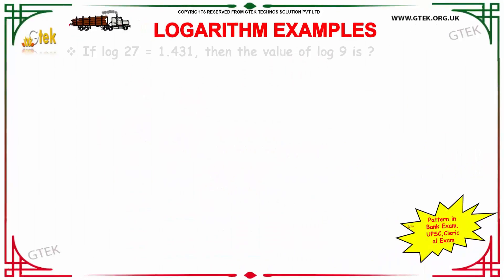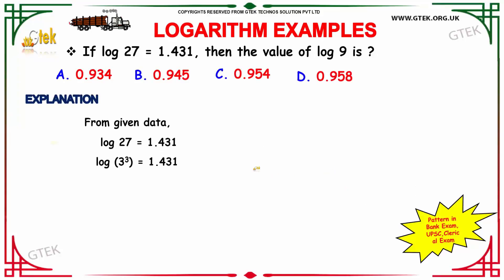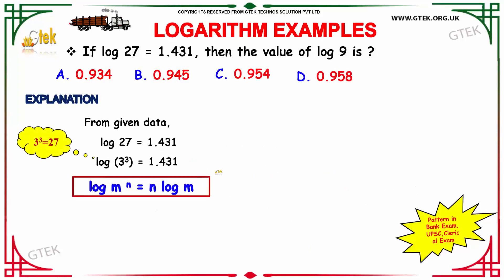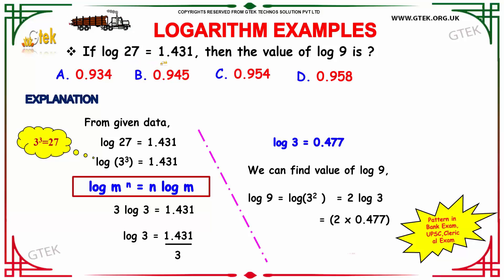Moving on to another example: log 27 has a value of 1.431. Then how much will be the value of log 9? The options are 0.934, 0.945, 0.954, and 0.958.